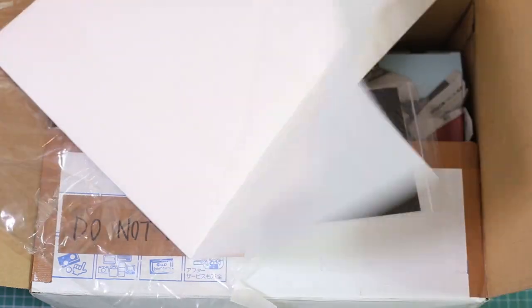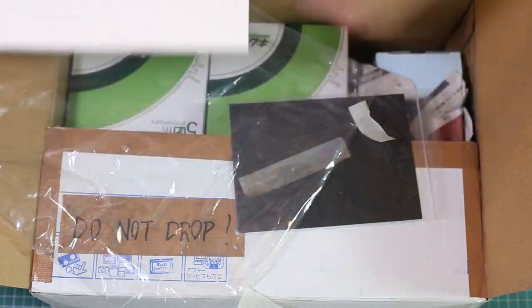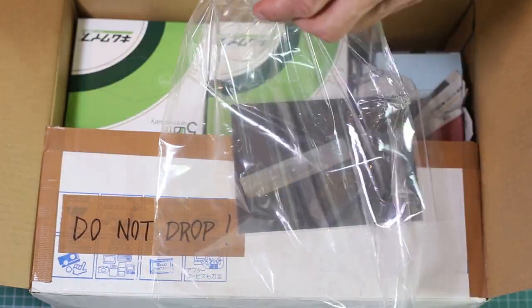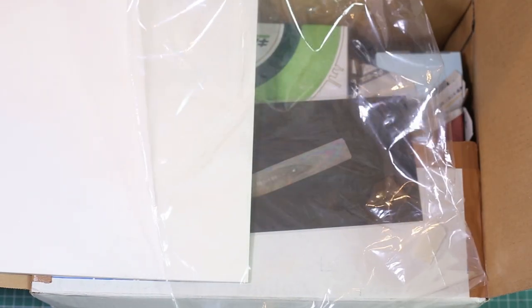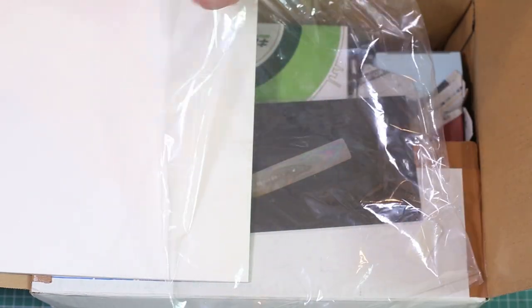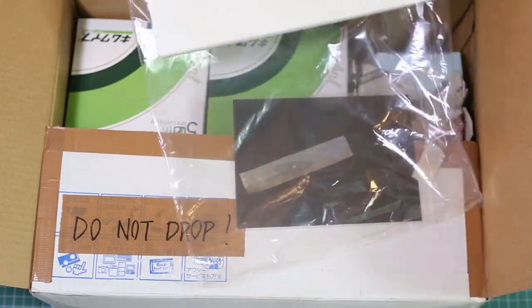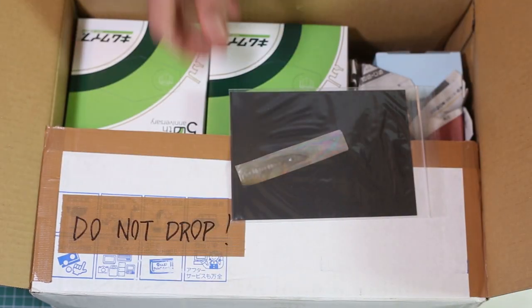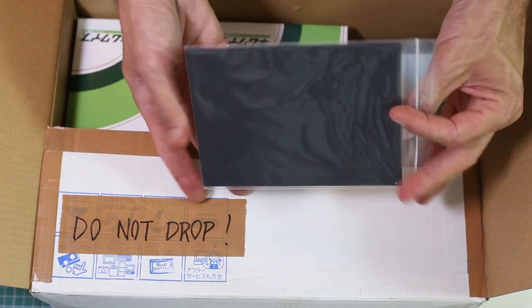What you see here is a special paper which is used for transferring the designs onto the piece you are lacquering. It's used for Maki-e and for chimkin and for some other techniques. You make a drawing or a picture, you trace it on this paper which is semi-transparent, translucent, you trace it and then on the other side you paint with Urushi and transfer it to the piece.